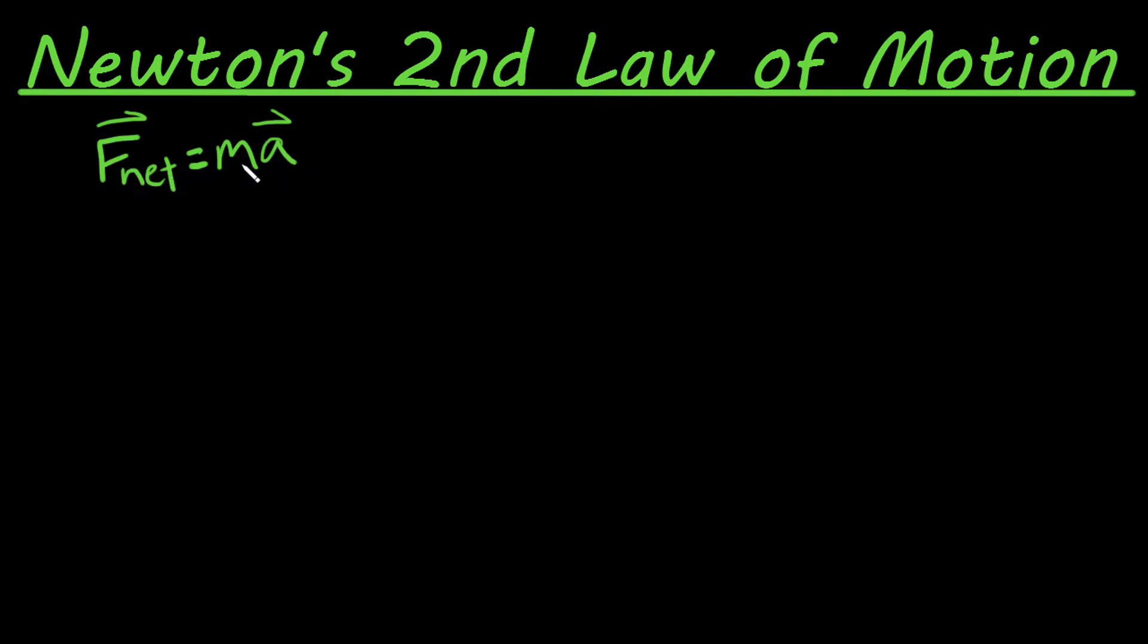The direction of the net force is always in the direction of acceleration. That makes sense, right? If we have a net force in a certain direction, that's the way the object is going to be accelerating. The sum of all the net forces is equal to mass times acceleration. This is what the second law of motion says.